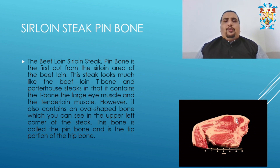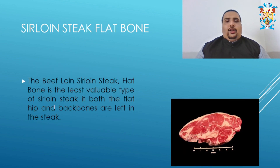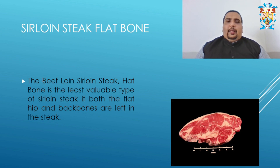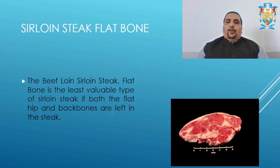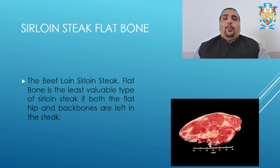Next is the sirloin steak flat bone. The beef loin sirloin steak flat bone is the least valuable type of sirloin steak. If both the flat hip and backbone are left on the steak, you can see there is more bone in this steak compared to any other loin steak.